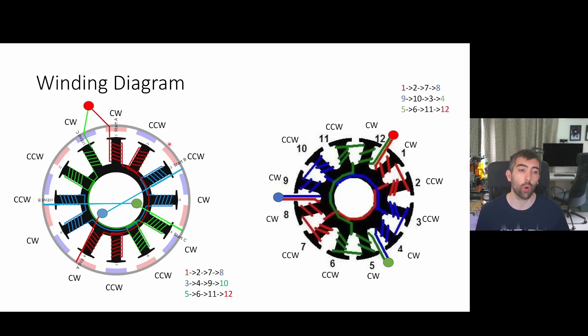Looking at the red phase, phase A, we're going to come in at the start and wind coil 1, then coil 2, then coil 7 and coil 8. You can see we're connecting coil 1 and coil 12 together with this red blob, coil 3 and coil 8 together with this blue blob, and coil 10 and coil 5 together with this green blob. The order is 1, 2, 7, 8, 3, 4, 9, 10, and 5, 6, 11, 12, with the coils to be connected together shown in the same color.